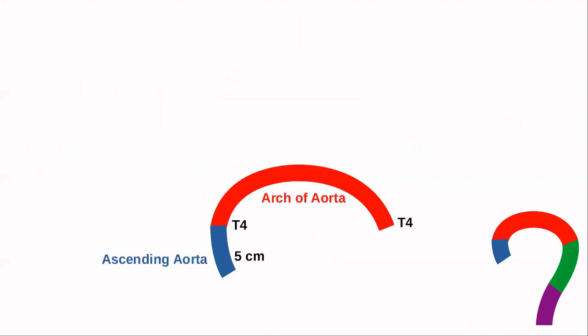Now we will see the branches of the different parts of the aorta. The ascending aorta is five centimeters long and ends at T4. At its origin it gives rise to the right and left coronary arteries — the arteries which supply the heart.